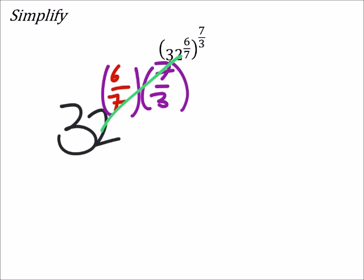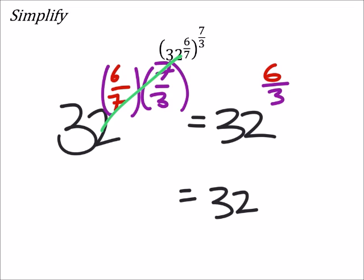And let's say that you didn't notice you could do any more cross-simplification. Then you'd have 32 to the power of 6 over 3, which is the same as 32 to the power of 2, because 6 divided by 3 is 2.